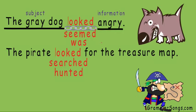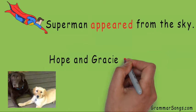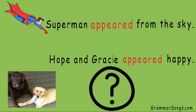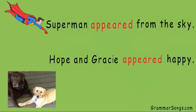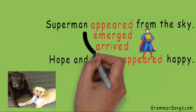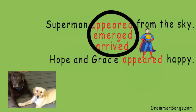Let's look at another example. Superman appeared from the sky. Hope and Gracie appeared happy. Although the same verb appeared is being used in both sentences, only one sentence shows action. Well, I'd imagine that when Superman appeared from the sky he flew down, so he was moving. Moving means action, so appeared in the first sentence must be an action verb. Also, this sentence would make sense if I substituted appeared for other action verbs: Superman emerged from the sky, or Superman arrived from the sky. The fact that I can substitute appeared with other action verbs that make sense is another clue that appeared in this sentence is showing action.